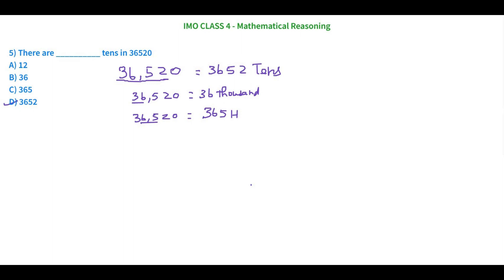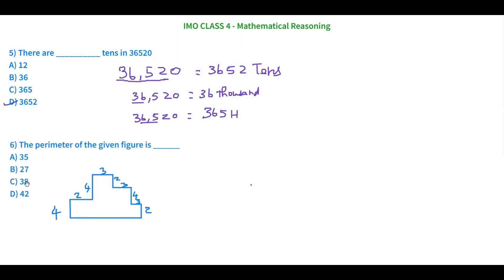Now let's see the sixth question for today. The perimeter of the given figure is blank. The options are 35, 27, 38, and 42. Perimeter means we add up all the outer sides. But not all sides are given — the bottom length is missing. We need to find the bottom side first before we can calculate the perimeter.